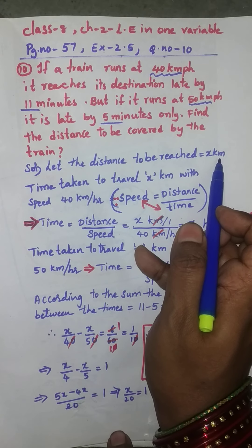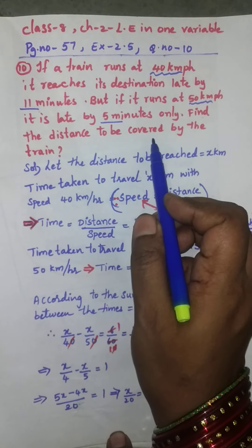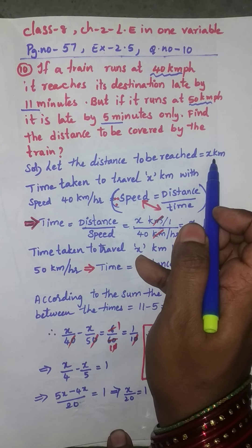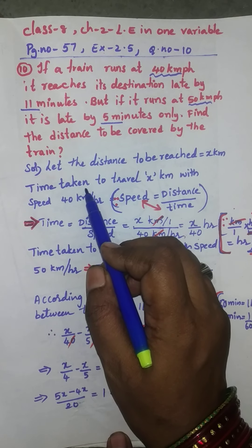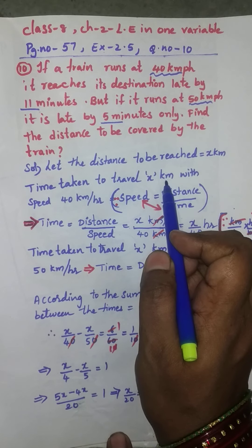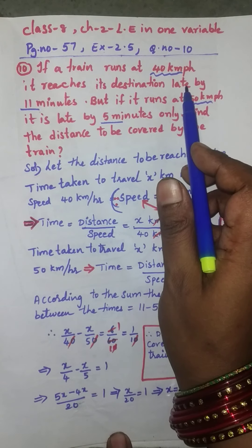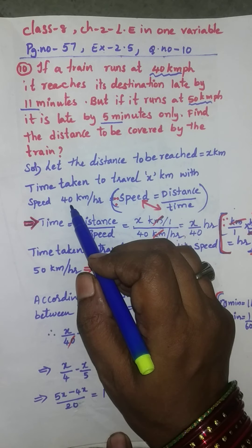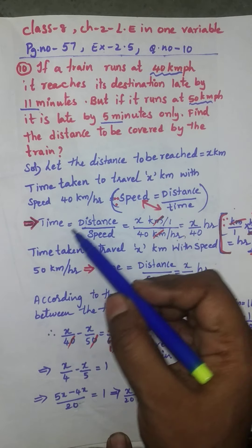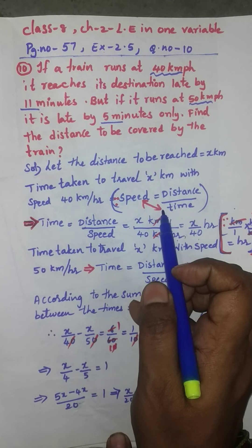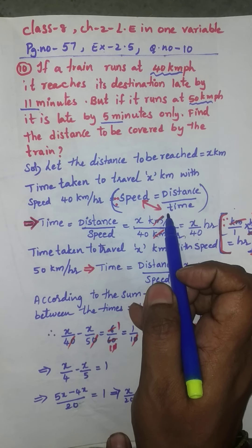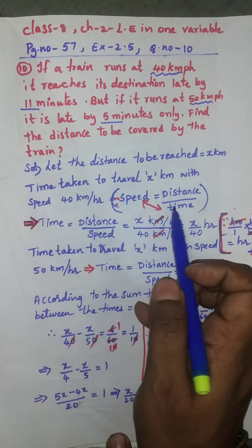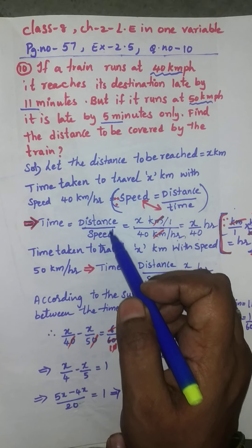Let the distance to be reached equal x kilometers. We don't know this value — we need to find it. Time taken to travel x kilometers at a speed of 40 km/h: since speed equals distance by time, time equals distance by speed.